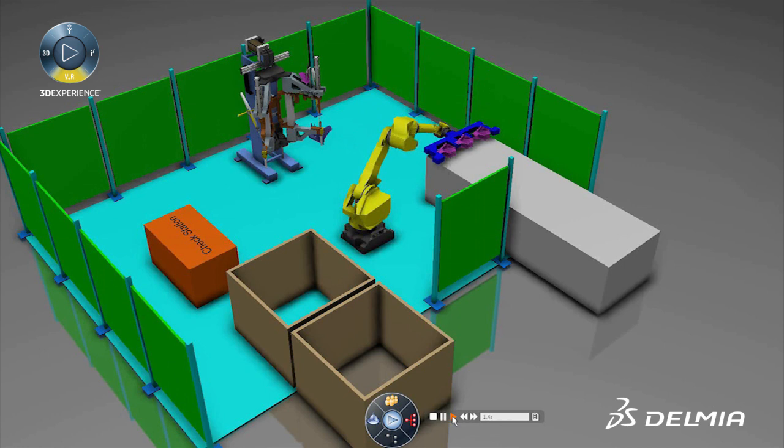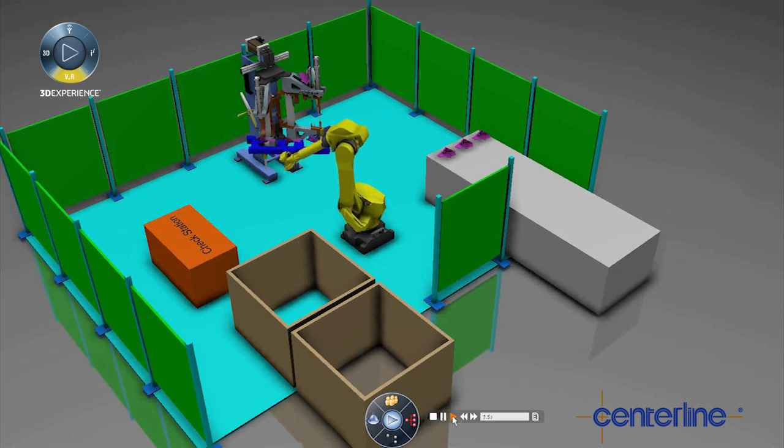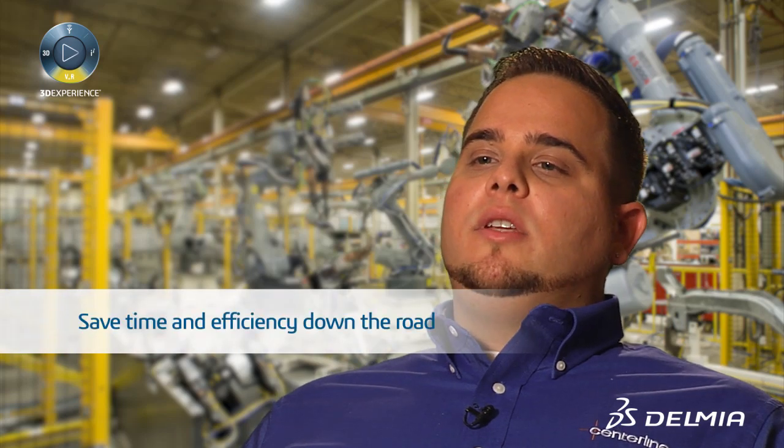With Delmia V6, we're taking a new approach, and we're going to streamline that and bring our digital manufacturing up to the front. At 25 percent design review, we can check that out, check the process, prove out just the initial concepts, and really save time and efficiency down the road and down the process stream.